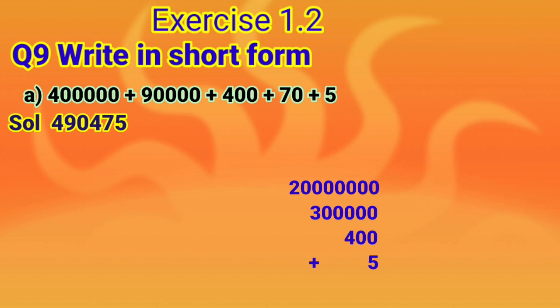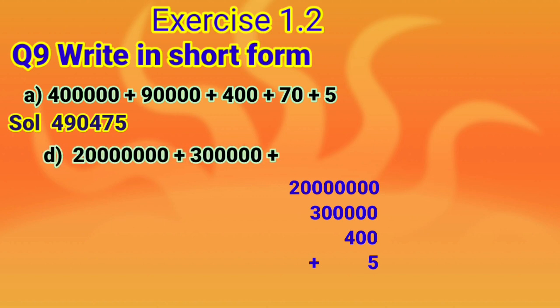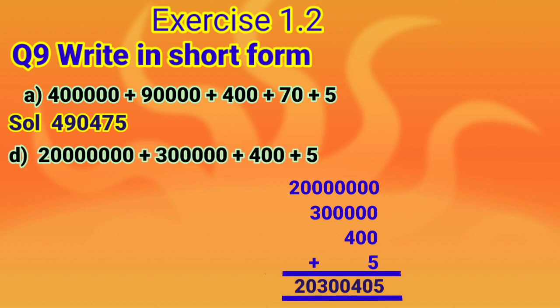Now let's begin part D: 2 crore plus 3 lakh plus 400 plus 5. On adding all these numbers, the result is 2 crore 3 lakh 405. This is how to write this number in short form.